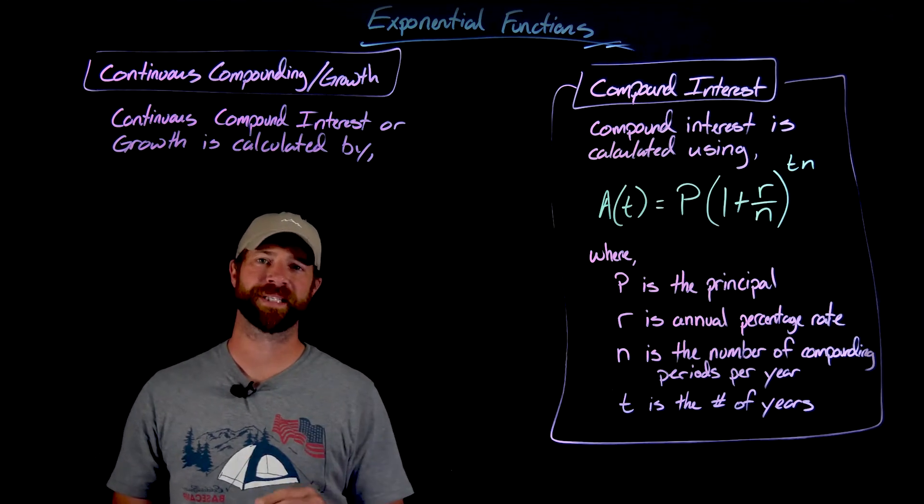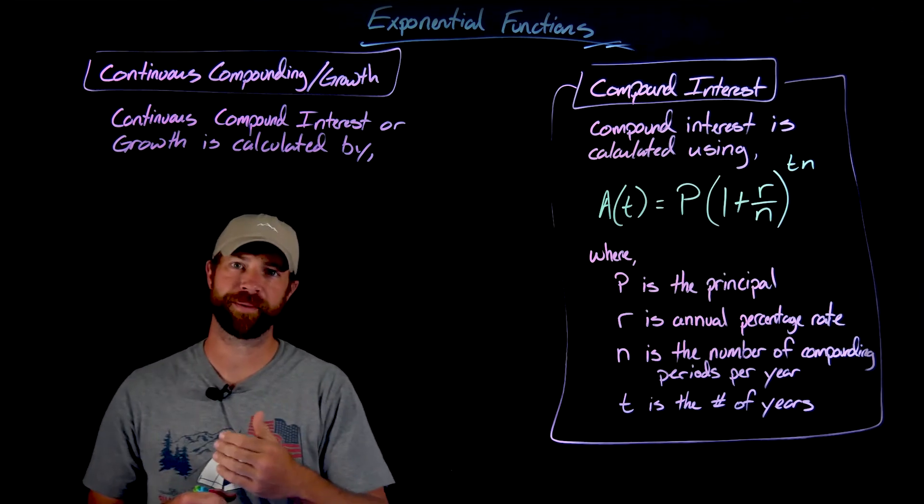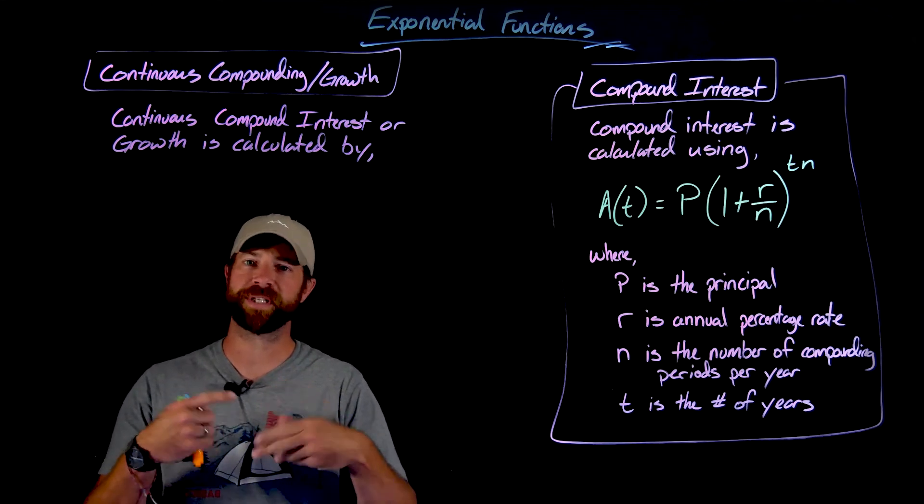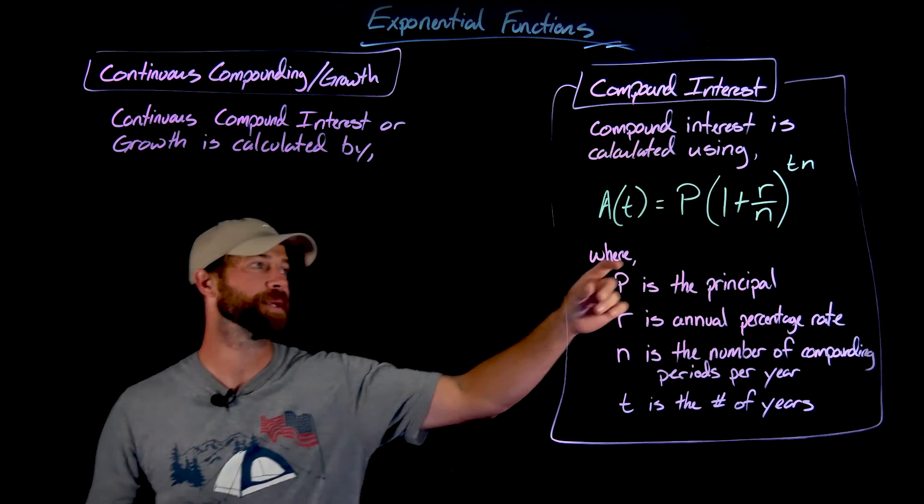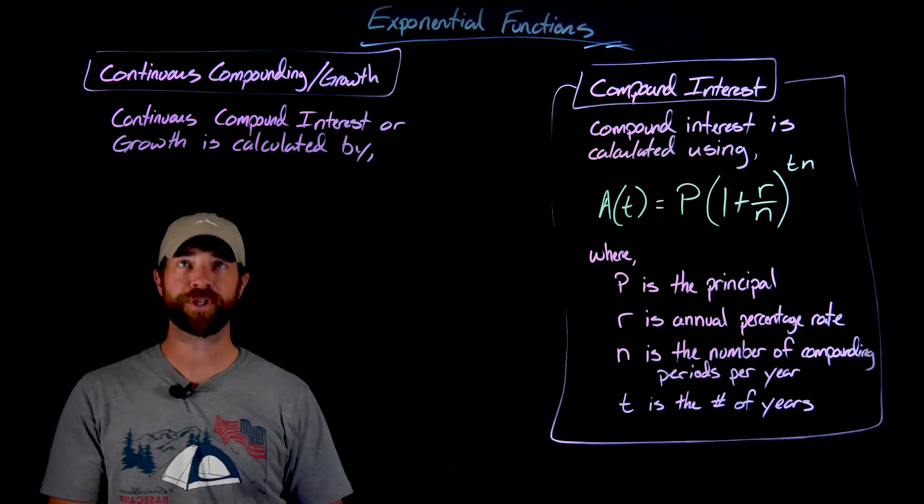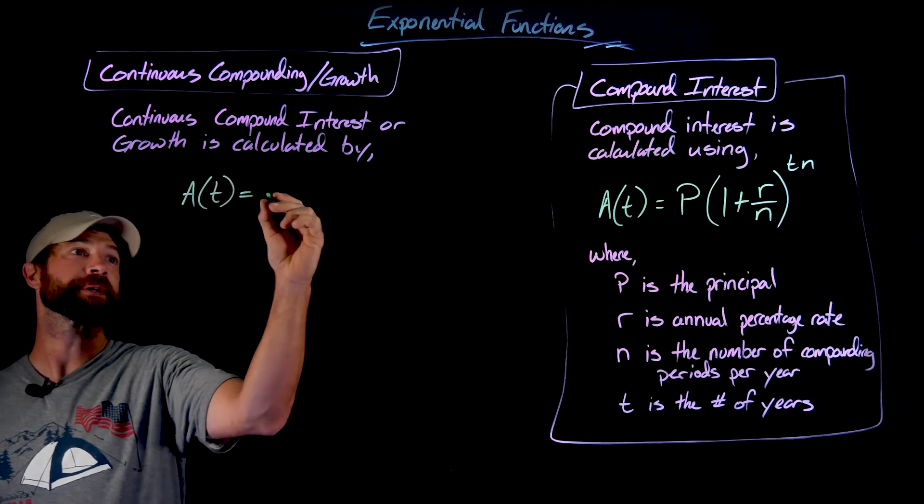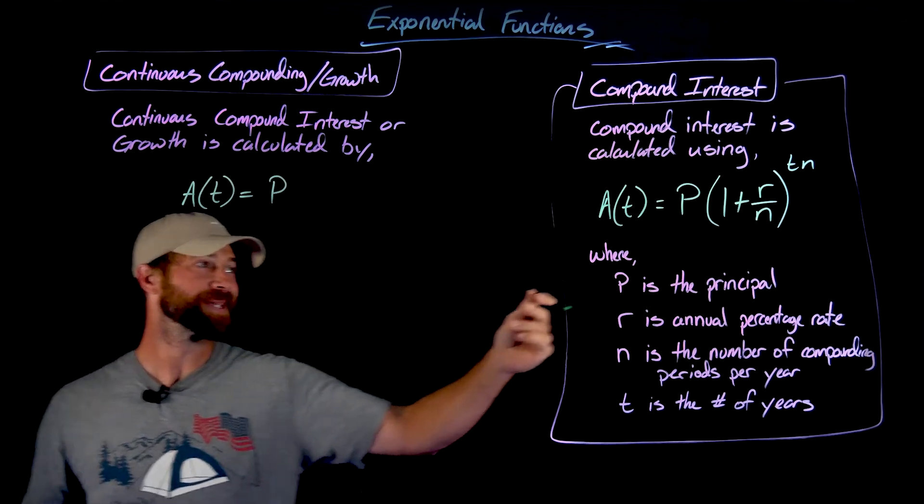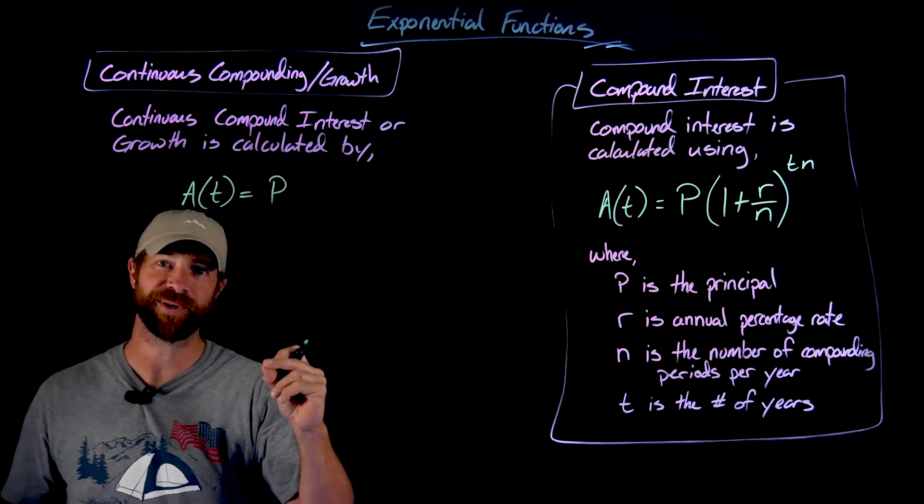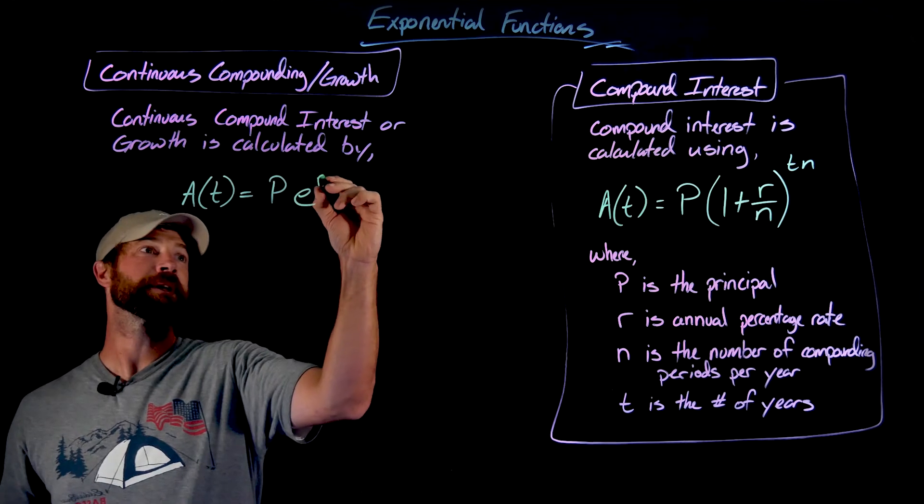And then finally, building off the idea of compound interest is the idea of continuously compounding. So instead of having a fixed number of compounding periods per year, we just say it's always compounding. Always. The interest is always being added. If we take that formula and if we let n just get infinitely large, that formula will turn into this. The amount equals, well, still your principal amount that was put into the account. But this growth factor right here becomes this transcendental number that becomes really important. And this may be the first time you see it, but you'll see it more. E, Euler's number, to the rt.